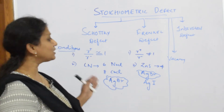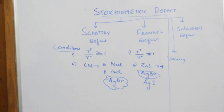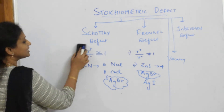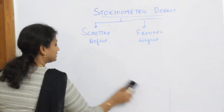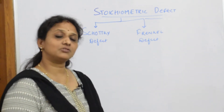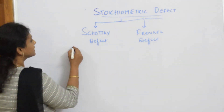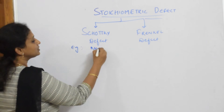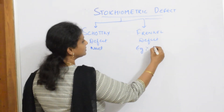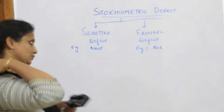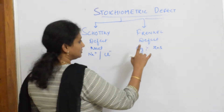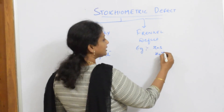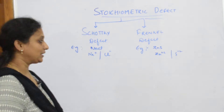Let us see the consequences and how to write them in the exam. Now let us write the consequences — what happens when Schottky and Frenkel defect exists or arises in a crystal. In Schottky defect I took the example of NaCl, where the cation is Na⁺ and the anion is Cl⁻. In Frenkel defect I took the example of zinc sulfide, where the cation is Zn²⁺ and the anion is S²⁻.